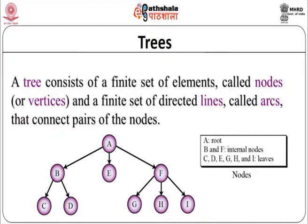We normally use tree terminologies. A is the root; B and I are internal nodes, and the rest - C, D, G, H, L - are leaf nodes. So you have a root, you have internal nodes or branch nodes, and you have leaf nodes. Root is the first node, the head node, which is the root of the tree. Then you have internal nodes and then you have leaves. That is the basic terminology of trees.